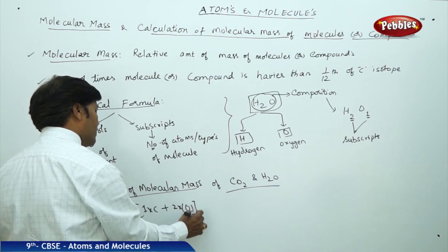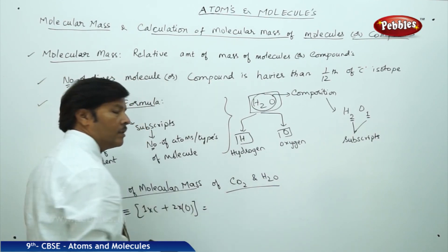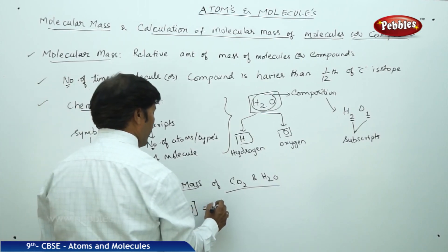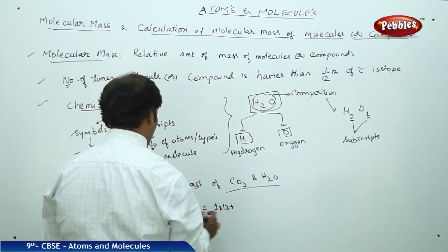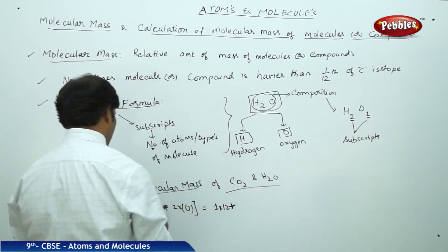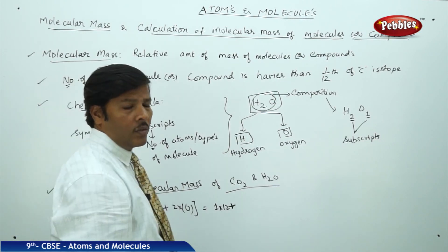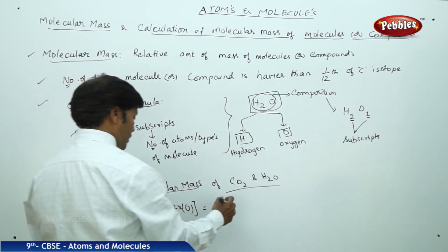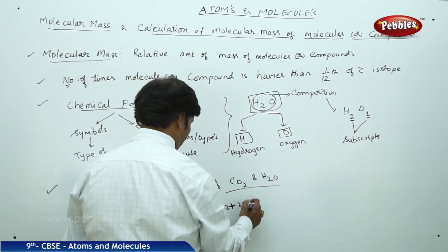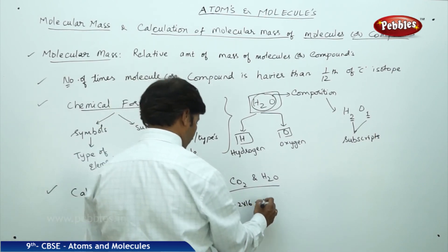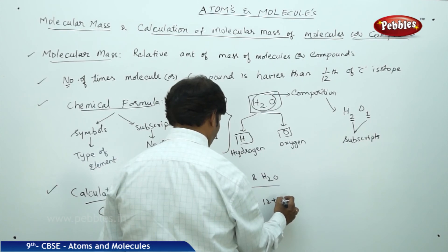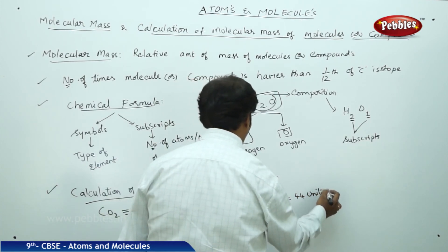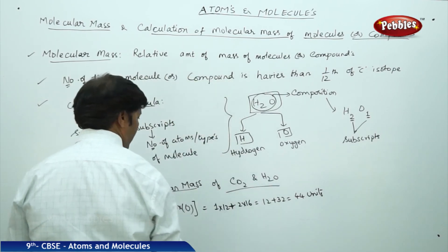The atomic mass of each carbon is 12 units, so 1 into 12. The atomic mass of each oxygen is 16 units, and there are two oxygens, so 2 into 16 equals 32. Therefore, 12 plus 32 equals 44 units, which is the molecular mass of carbon dioxide.